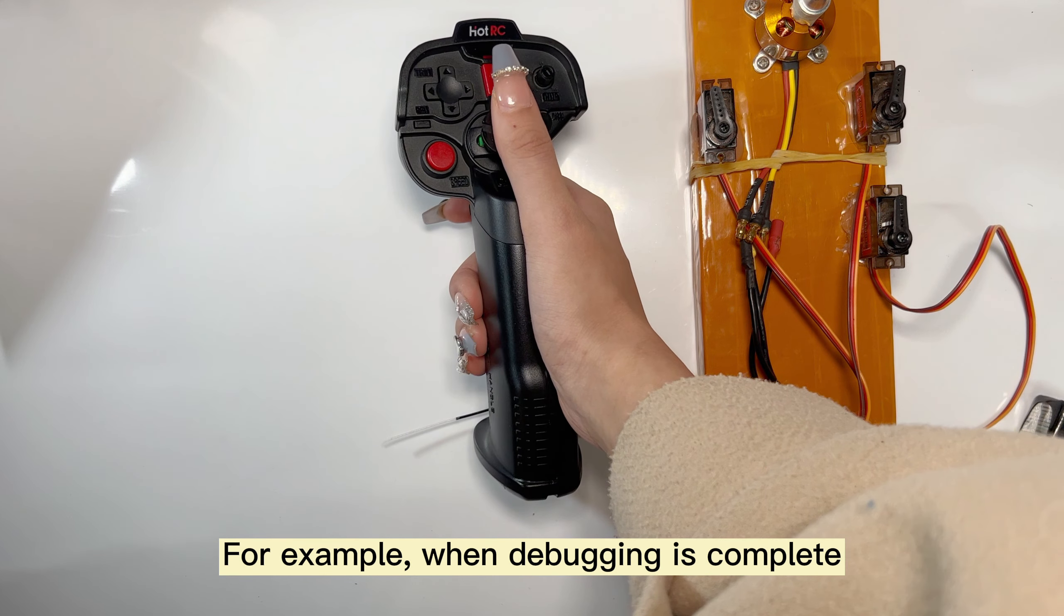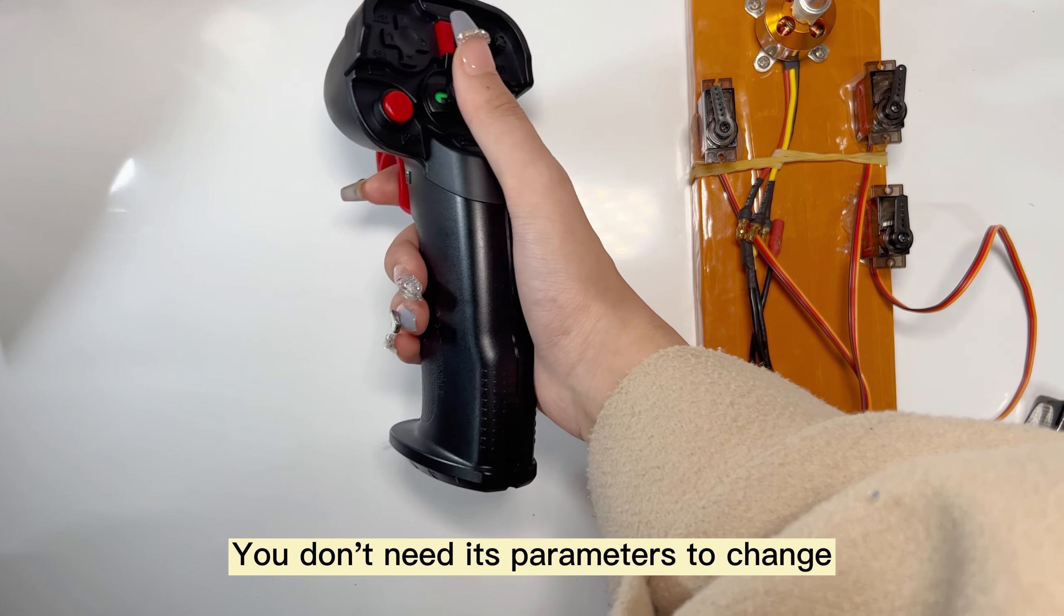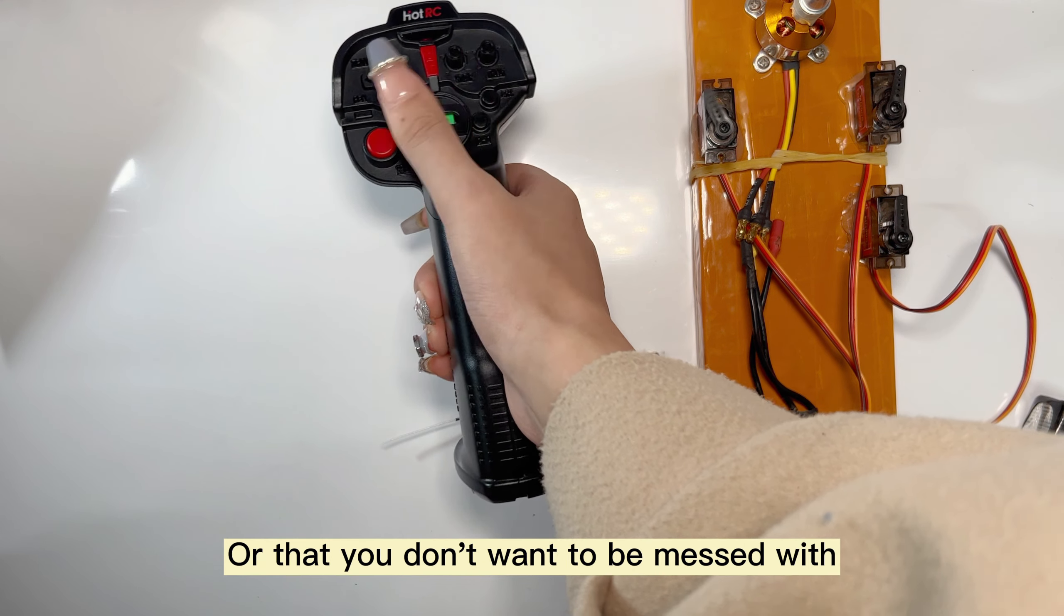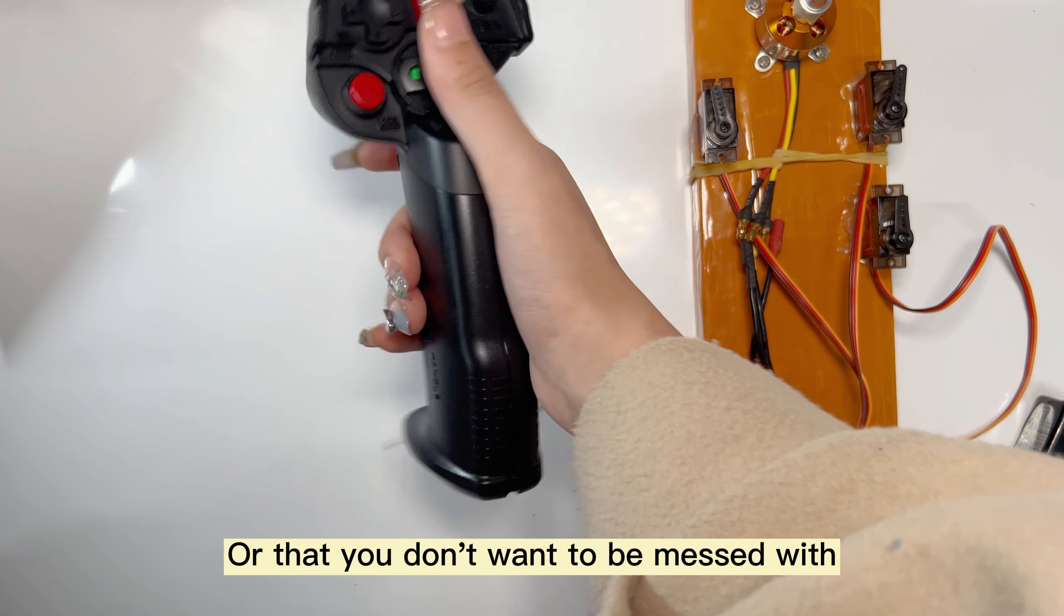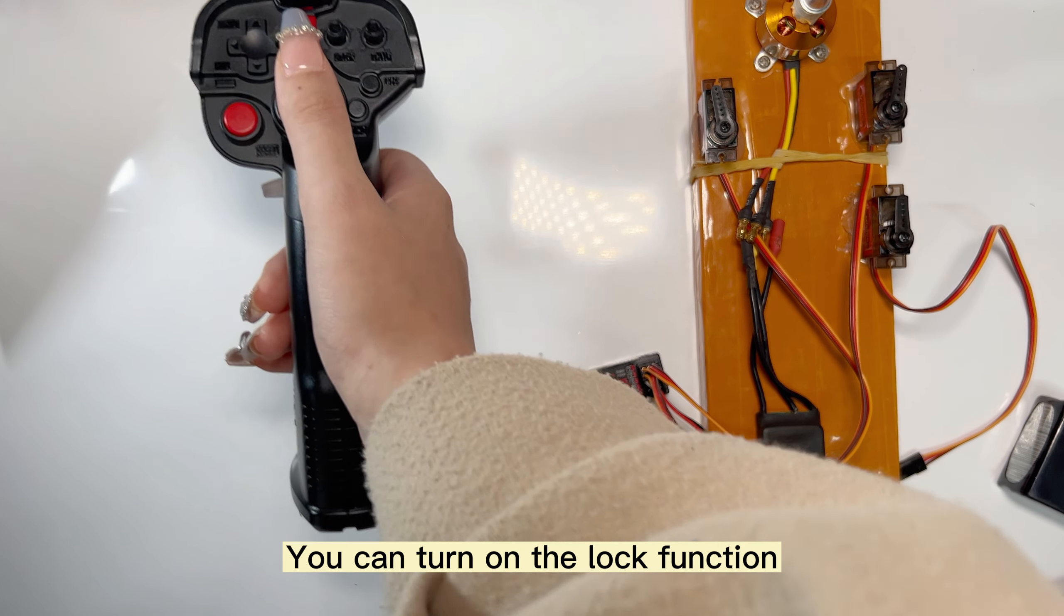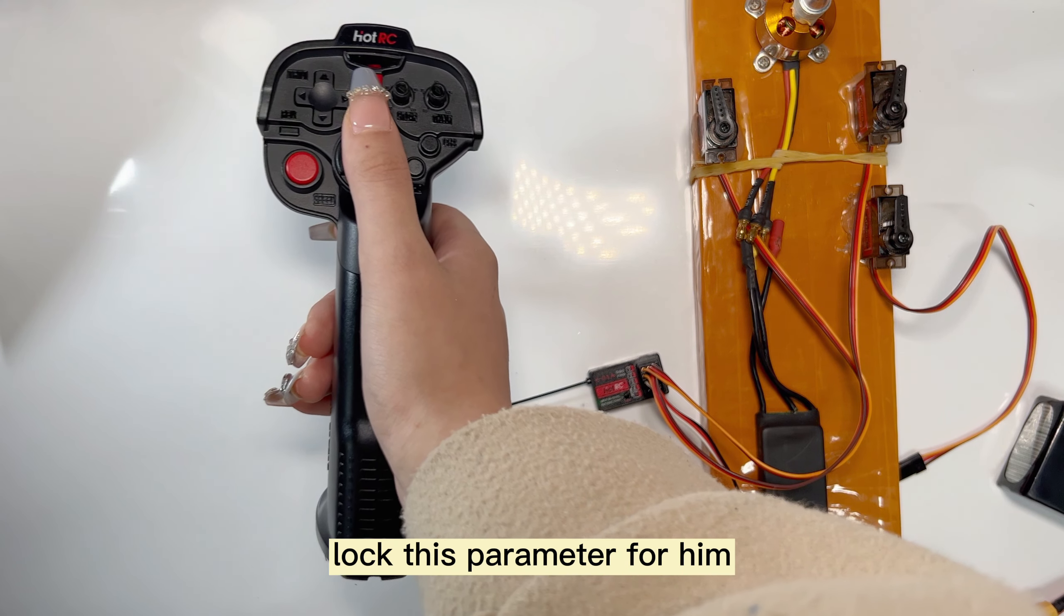For example, when debugging is complete and you don't need its parameters to change or don't want them to be messed with, you can turn on the lock function to lock these parameters.